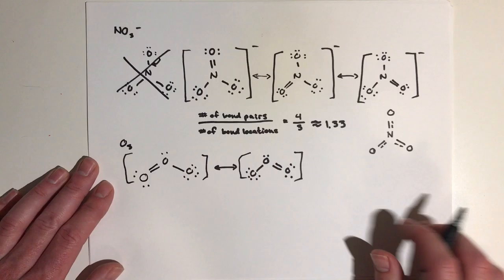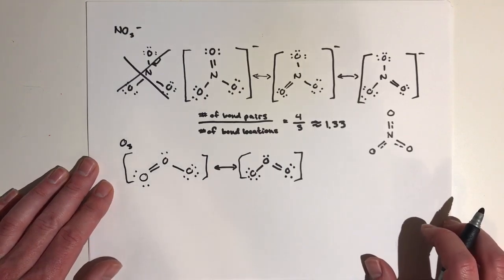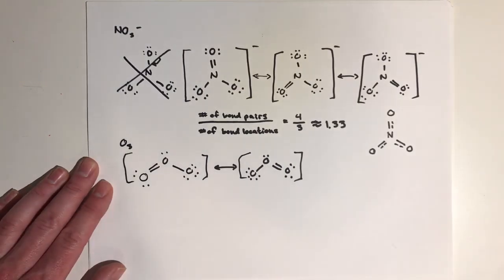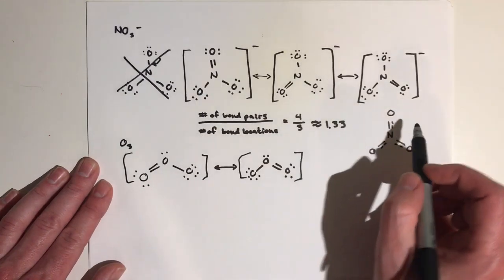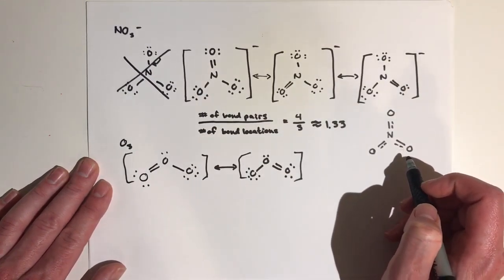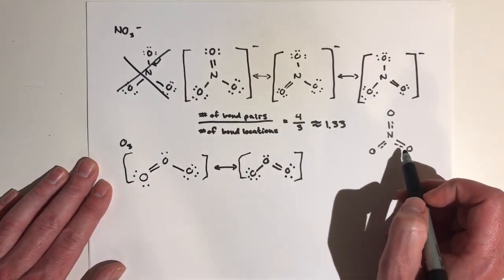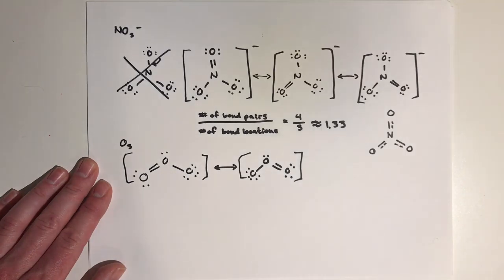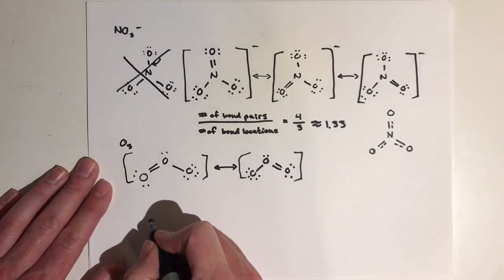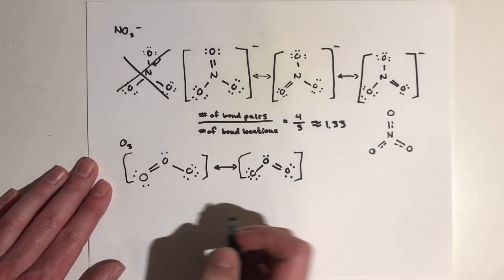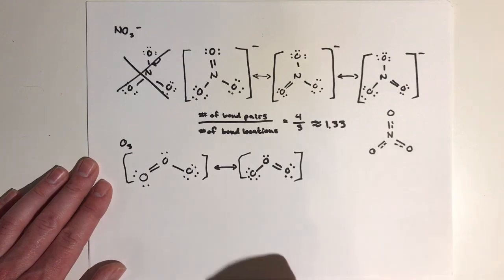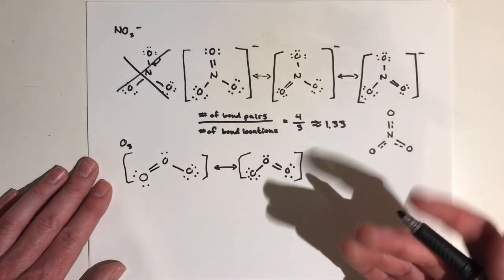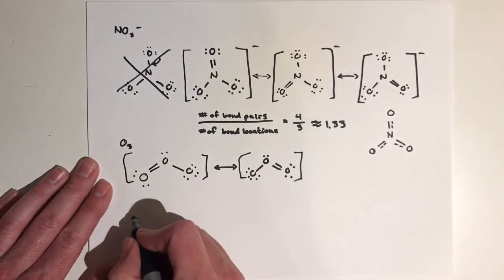So why is this important? Why do we need to know what the resonance structures look like? These resonance structures don't actually represent what a molecule looks like in reality. But based on the possible resonance structures for a molecule, we can figure out what an accurate representation of it would be.